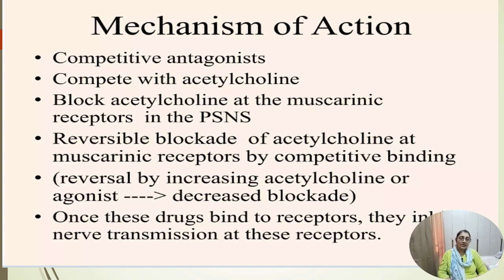At the muscarinic receptor in the parasympathetic nervous system, there is a reversible block of acetylcholine at the muscarinic receptor by competitive binding. If the concentration of acetylcholine is increased, the anti-cholinergic drug is released from that receptor and acetylcholine will bind. This is the reversible block, and once this drug binds to the receptor, it inhibits transmission at those receptors.